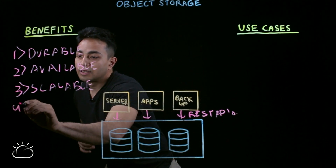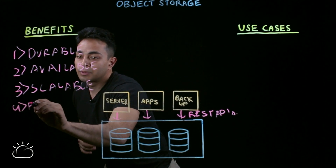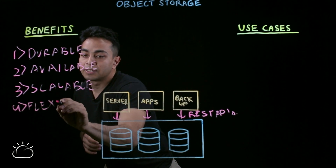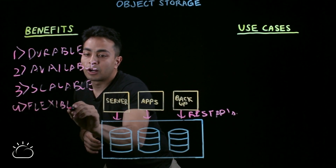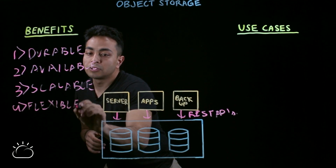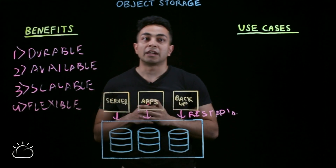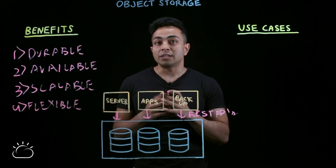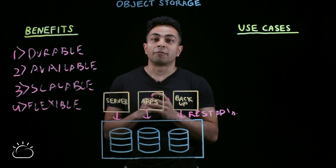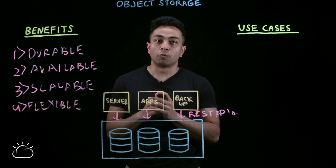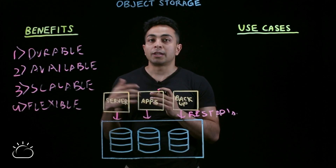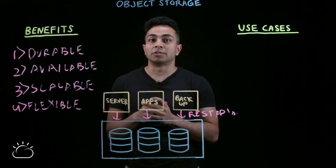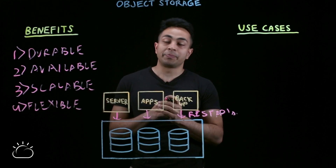The fourth one is flexibility. Object store allows you to access the data over REST APIs, which means you can access the data from anywhere in the world, depending upon your workload requirements.